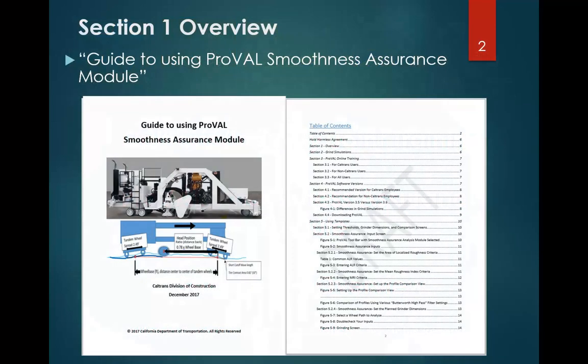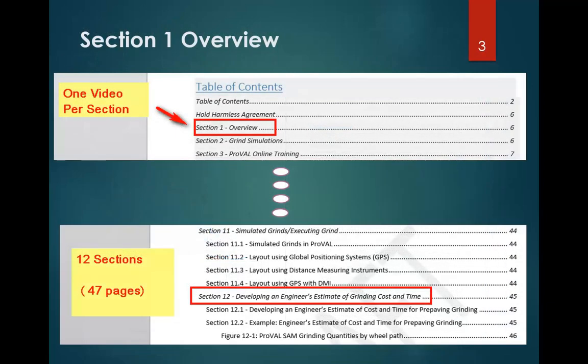This video and the other 11 videos will accompany the guide we've developed. The guide is shown here on this slide — it's titled The Guide to Using the ProVal Smoothness Assurance Module. There's a graphic of a typical grinder and a graphic showing a grinder with all its dimensions, which will be covered in this manual. There will be one video for each of the 12 sections in the manual. Right now we're on video number one, which covers section one: the overview.